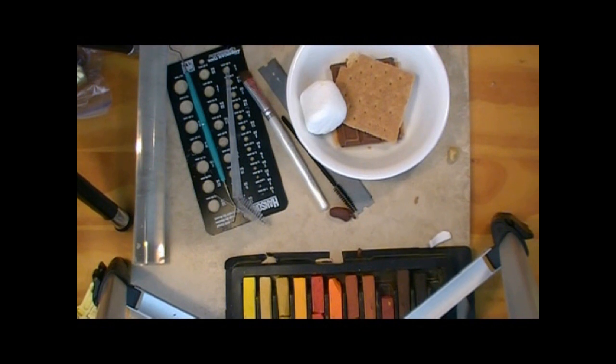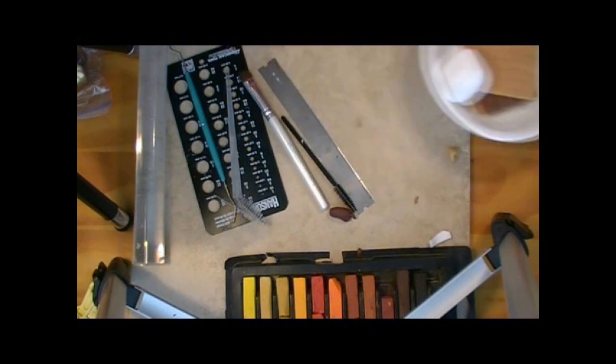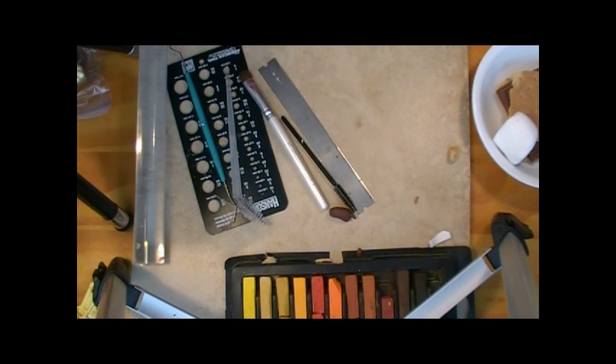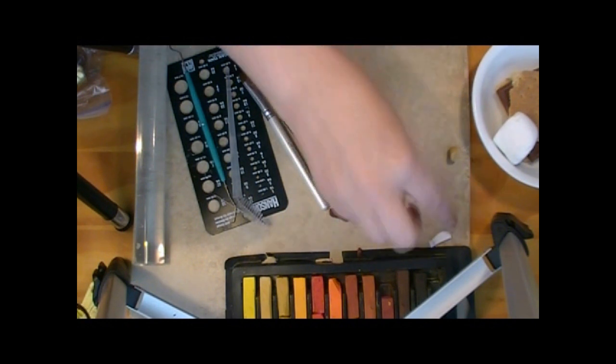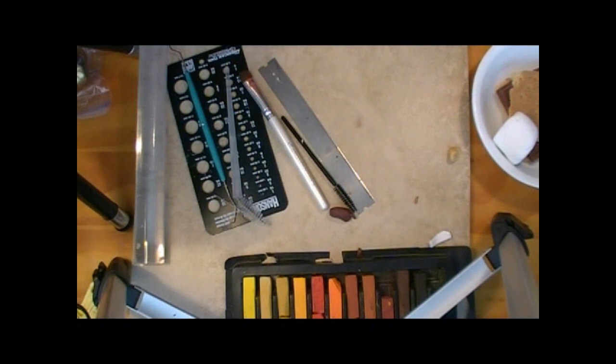Since we're going to be working with white clay, we are going to start with the marshmallows first. Always go from the lightest colored clay to the darkest color when you're working with clay. And we need a wet wipe. I forgot to get my wet wipe out.